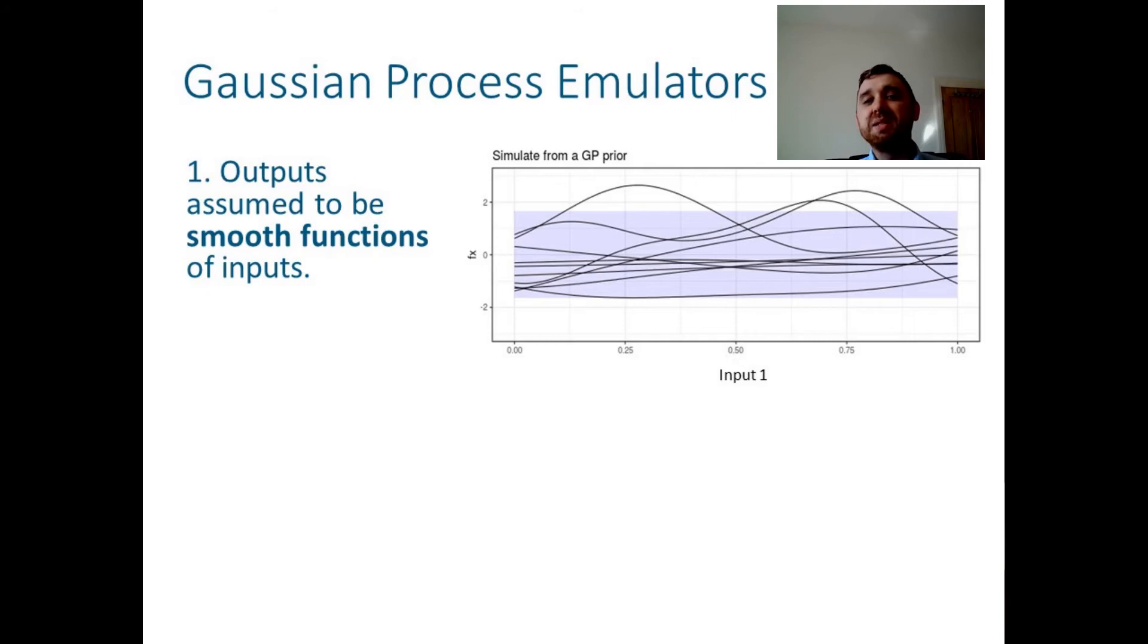Gaussian process metamodels are one class of models that can capture these kind of relationships. These are non-parametric Bayesian statistical models that make much less restrictive assumptions about simulation. More specifically, they assume that simulation outputs are smooth functions of simulation inputs, and the input points that are closer together will lead to similar outputs. These assumptions are codified in prior distributions. And samples from such a prior distribution are displayed on the figure in the slide.